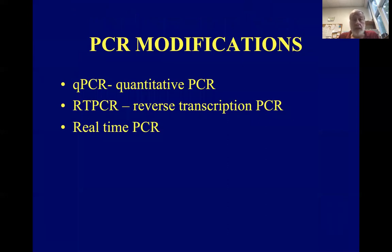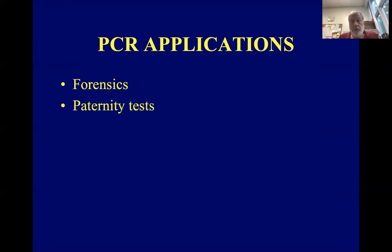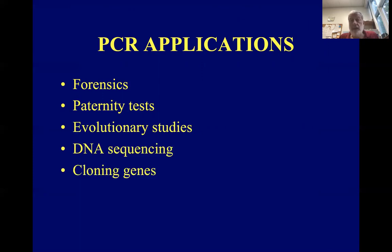PCR has been used so widely and has also been modified. There's qPCR — quantitative PCR — reverse transcription PCR, and real-time PCR. These are all variations on the basic PCR theme. PCR can be used for forensics, where a tiny bit of tissue or fluid from a crime scene can be amplified enough to study and identify. It can also be used in paternity tests, evolutionary studies, DNA sequencing, and the cloning of genes. Probably every lab working with DNA around the world does PCR.